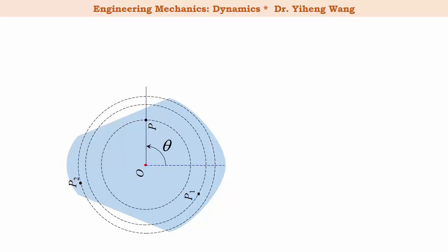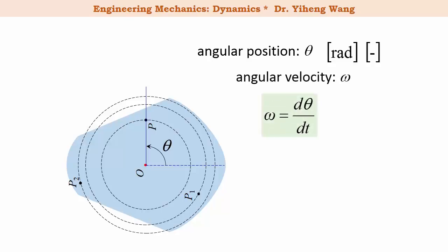Theta is known as the angular position for this rigid body during rotation, and it has the unit of radian, which is dimensionless. The time derivative of angular position is angular velocity, omega, which equals d theta over dt, and it has the unit of radian per second.